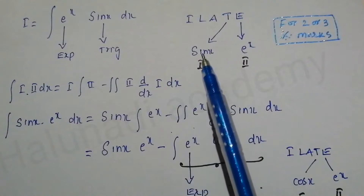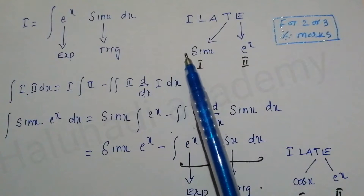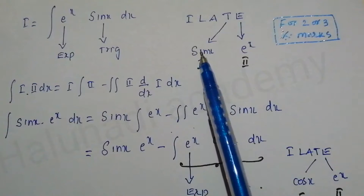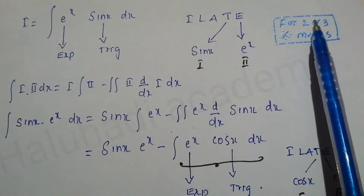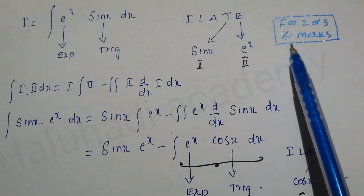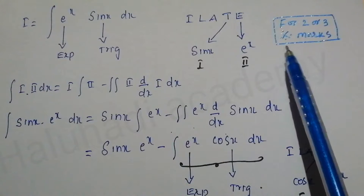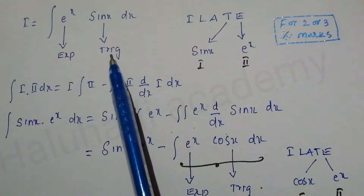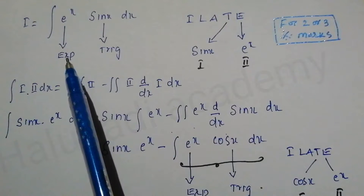Welcome to All of the Academy. This is an important question from integration by parts. This question is for part A: 2R 3 marks, part B: 2 marks, and part C: 3 marks. This is the most important problem, so let's see how to do it.